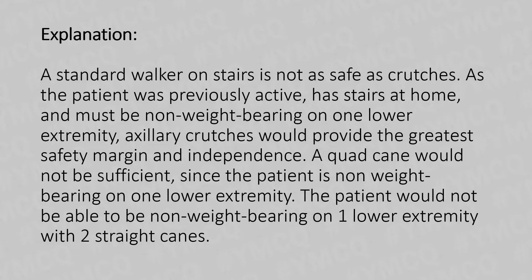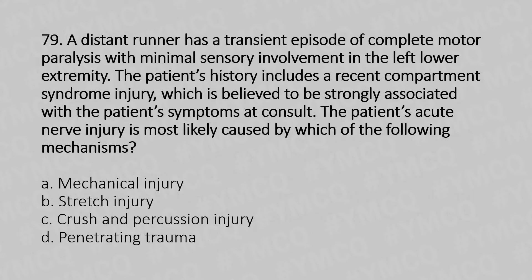Now let's move to our 79th question. A distance runner has a transient episode of complete motor paralysis with minimal sensory involvement in the left lower extremity. The patient's history includes a recent compartment syndrome injury, which is believed to be strongly associated with the patient's symptoms. The patient's acute nerve injury is most likely caused by which of the following mechanisms?